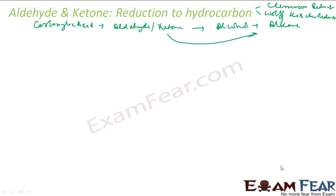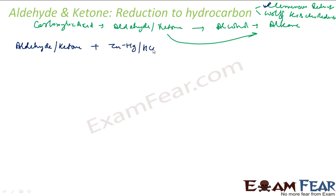In Clemmensen reduction, we have an aldehyde or ketone and reflux it with zinc amalgam and concentrated acid, preferably HCl. The result is that the C=O becomes CH2 — that's how it works.